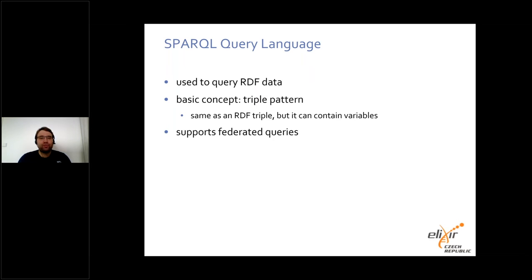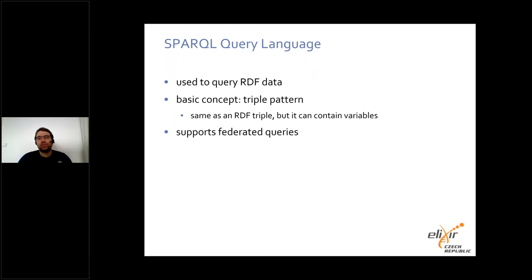One of the most important features of the SPARQL language is the federated query extension. It allows a SPARQL service to redirect a portion of a query to another SPARQL service and combine the obtained results with results from the rest of the query. This highly increases interoperability, because one query allows users to get information from different datasets. Later I will show you an example of how one query can employ four SPARQL services to solve a very complex task.